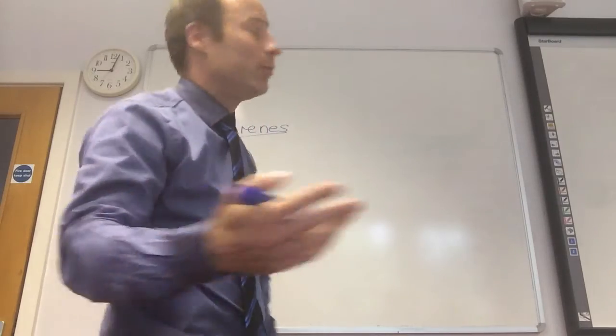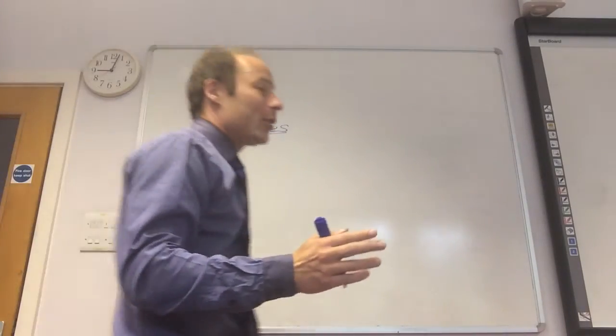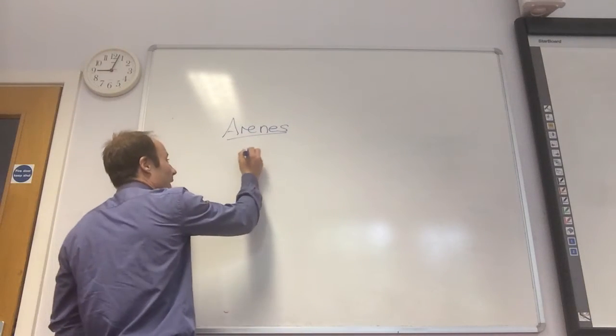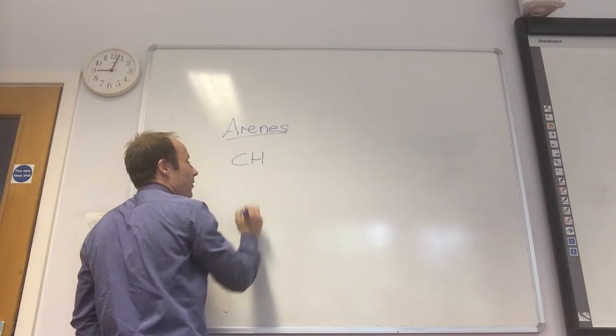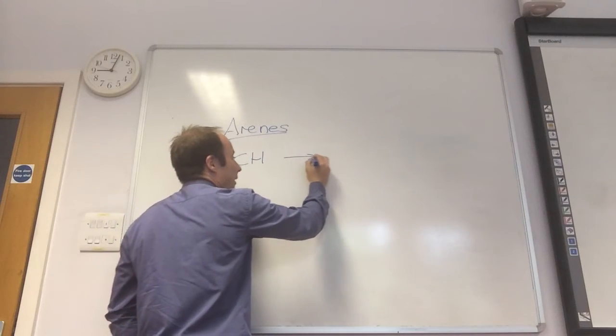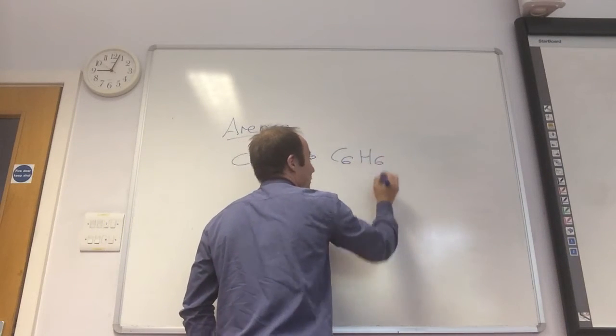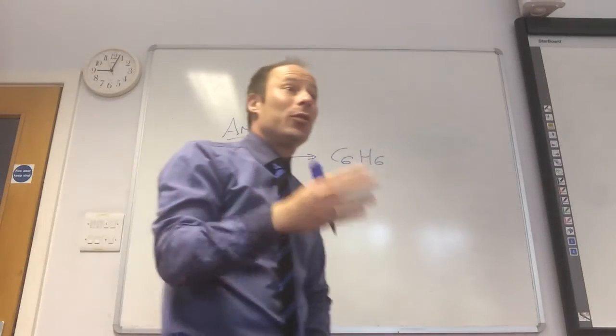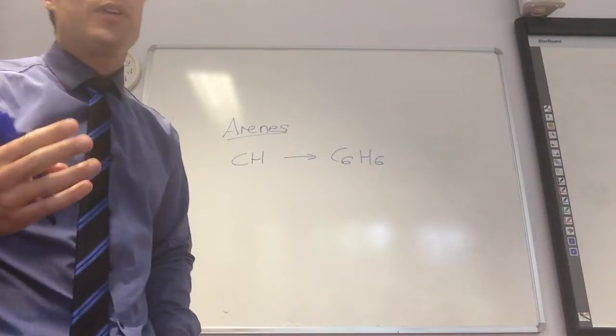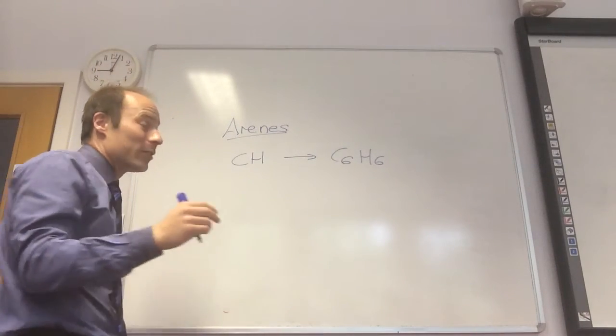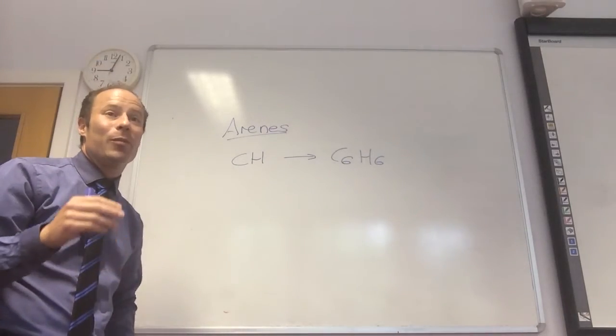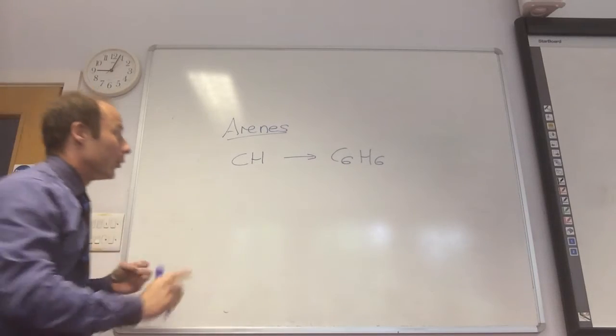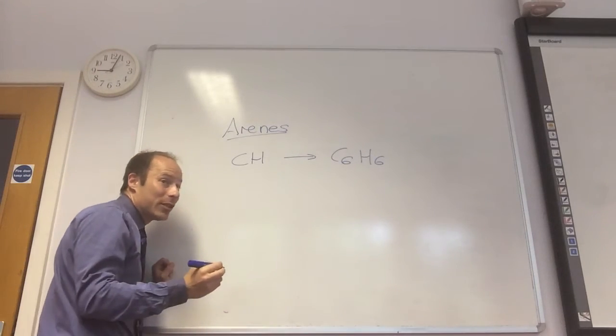So we're going to look at the structure of benzene, but benzene has the empirical formula of CH, and its molecular formula is C6H6. And its structure puzzled chemists for a long time, because they were trying to work out how do I combine six hydrogens with six carbons to make sure that carbon's got four bonds and hydrogen only has one bond.